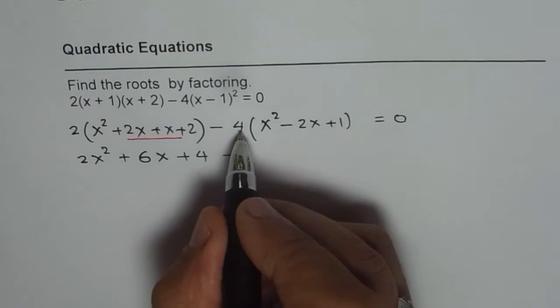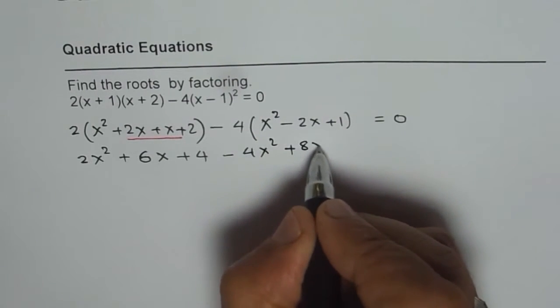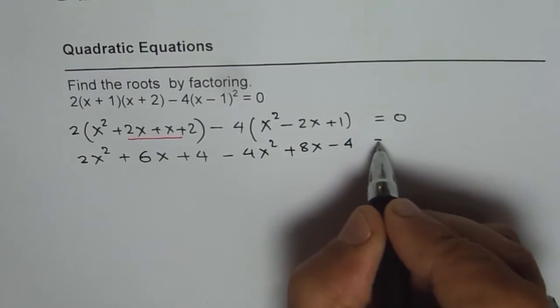Let's multiply these terms with -4. So we get -4x² + 8x - 4 = 0.